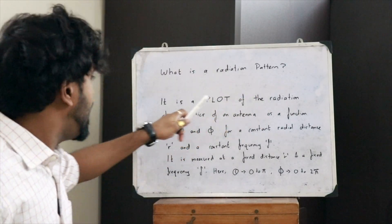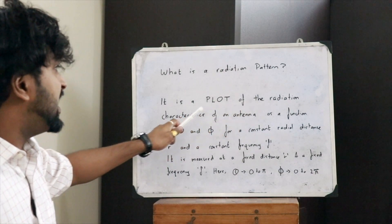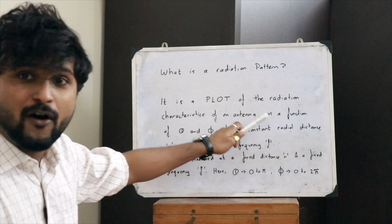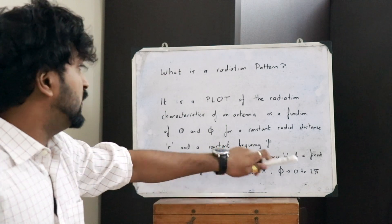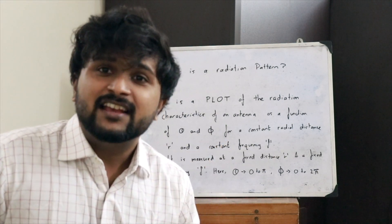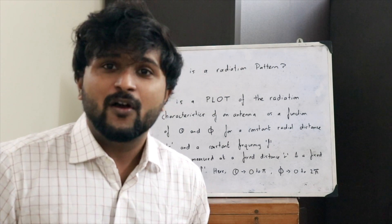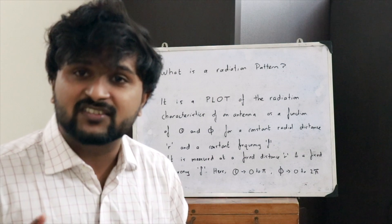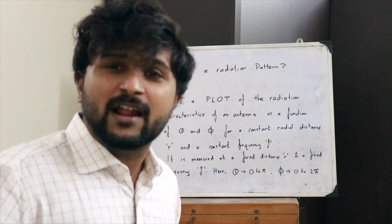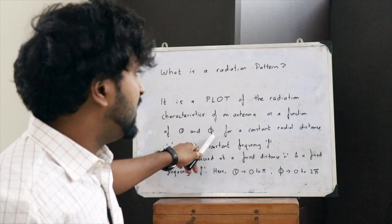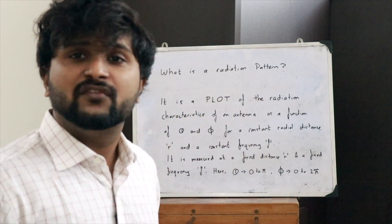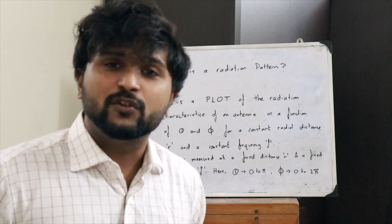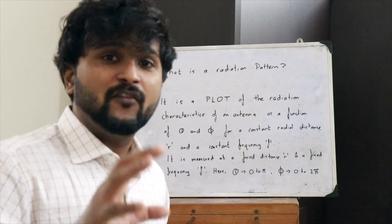So what is the radiation pattern of an antenna? The radiation pattern of an antenna is a graphical plot of the radiation characteristics of an antenna as a function of theta and phi, for a constant radial distance r and a constant frequency f. That is what we mean by the radiation pattern of a particular antenna.